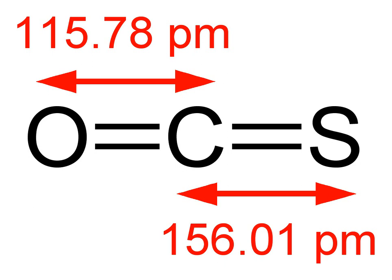It is a linear molecule consisting of a carbonyl group double bonded to a sulfur atom. Carbonyl sulfide can be considered intermediate between carbon dioxide and carbon disulfide, both of which are valence isoelectronic with it.